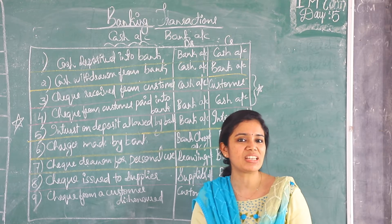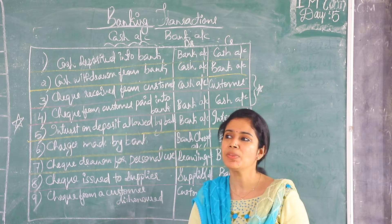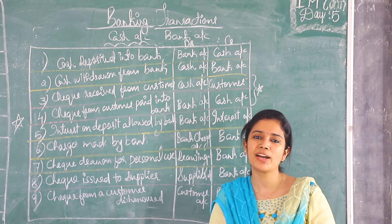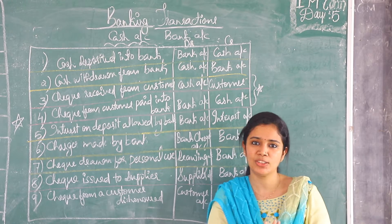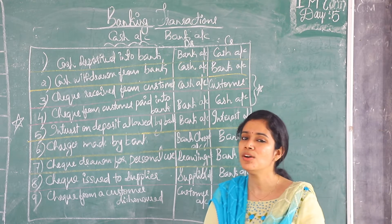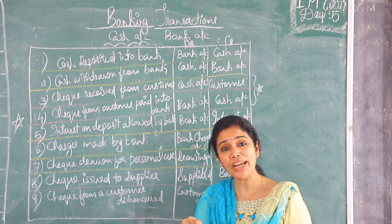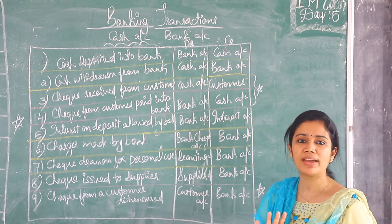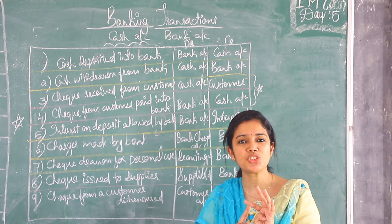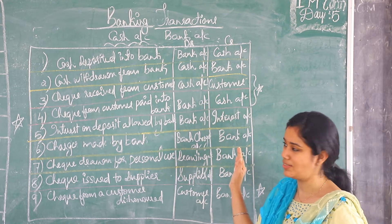When cash is received, the value of cash increases, so cash is to be debited, and credit the giver. The entry is: cash account debit to customer account. The fourth transaction is check from a customer paid into bank. The check we receive from a customer, when it is paid into bank, it is just like cash deposited into bank. So bank account debit to cash account — bank account is the debit aspect, cash account is the credit aspect.